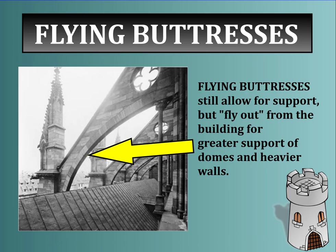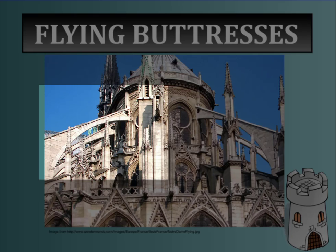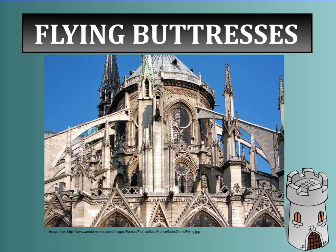Some of the more famous structures in the world use something called flying buttresses. A flying buttress still provides support but flies out from or away from the building for greater support — to support things like domes and heavier walls. This structure is Notre Dame Cathedral in Paris. You can see the flying buttresses flying outwards from the building to hold the dome up from collapse.